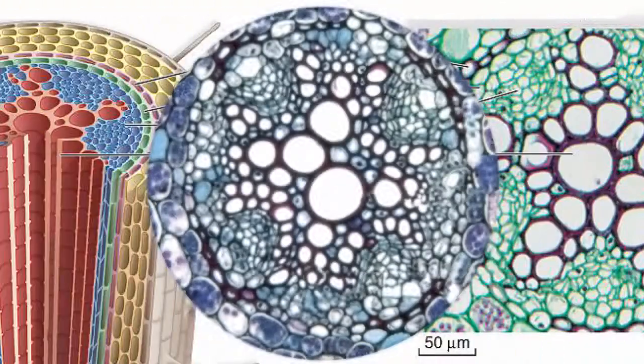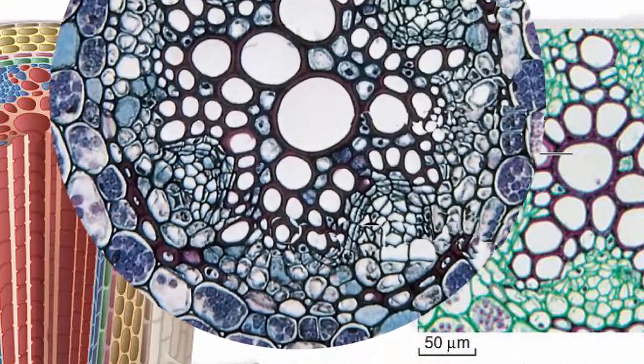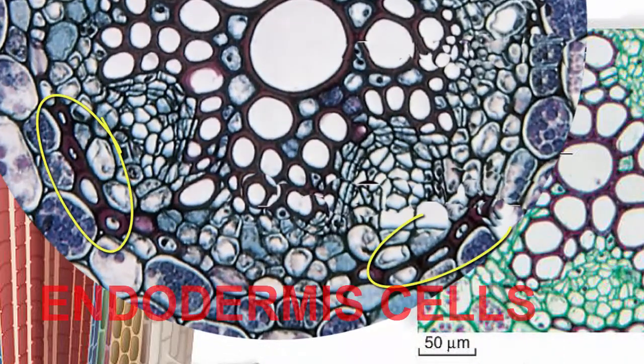The endodermis is greatly observed in most roots than in stems thus its role in these organs are quite obligatory.